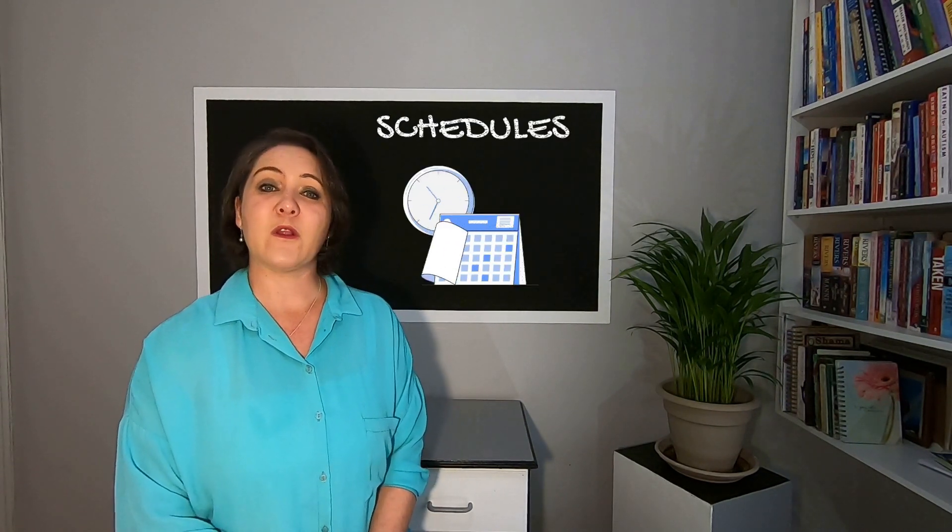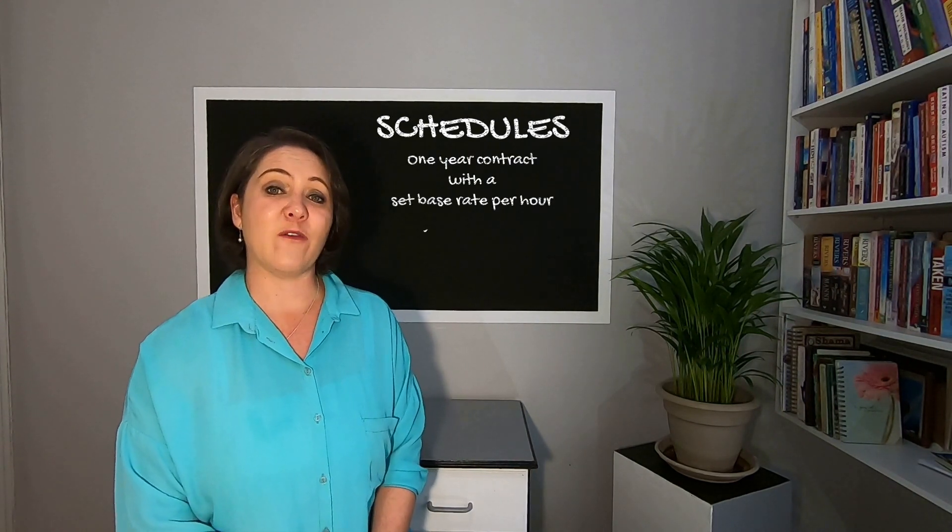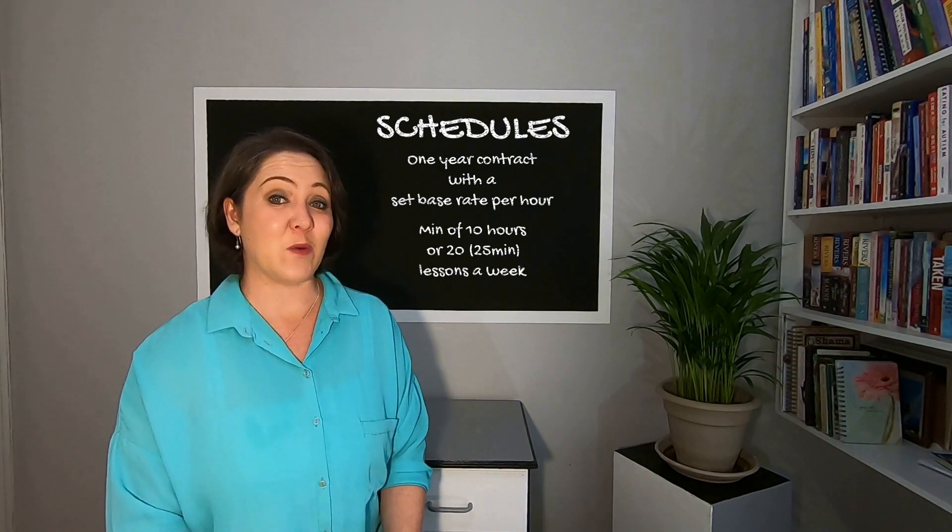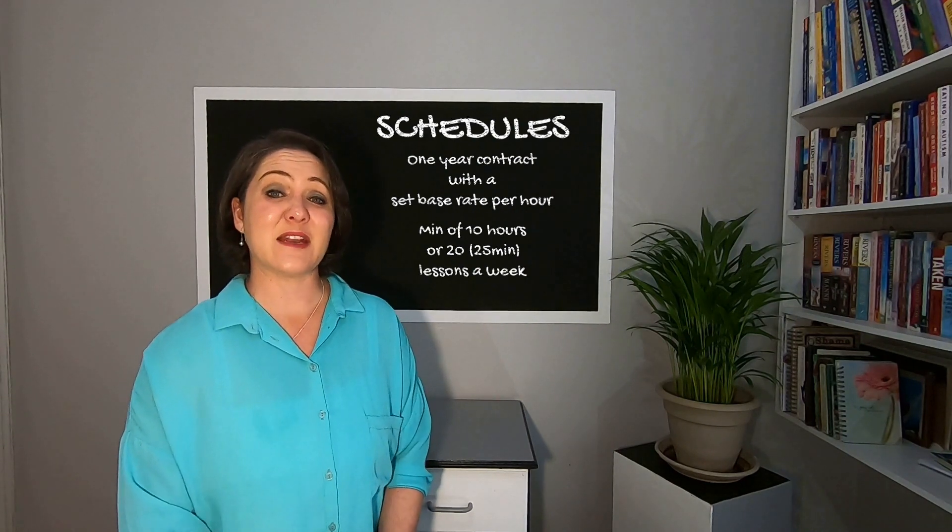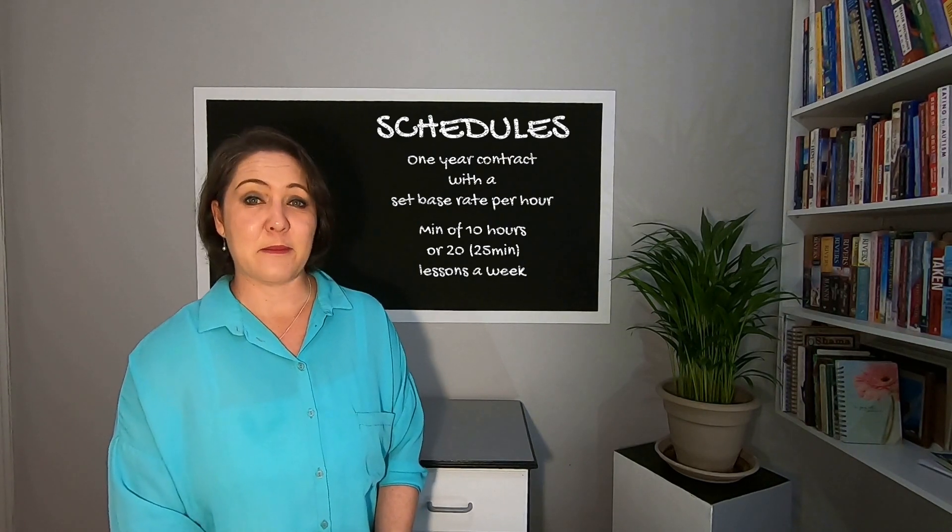Now, we're going to talk about schedules. The online English learning institutions will typically offer you a one-year contract and they'll require you to work a minimum of 10 hours or 20 lessons in a week. However, you can book more hours if you wish. I typically work 25 to 35 hours a week which equates to roughly 4 hours a day.